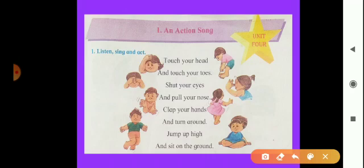In this poem, what is there? There are actions. We can see these actions in pictures also. In the first line there is 'touch your head.' Look here — it is the action of touching the head. Touch your head and touch your toes. Now the second line: touch your toes. Look here — this boy touches his toes.